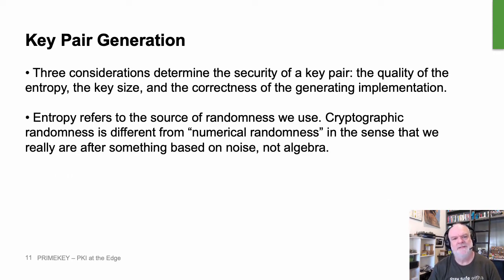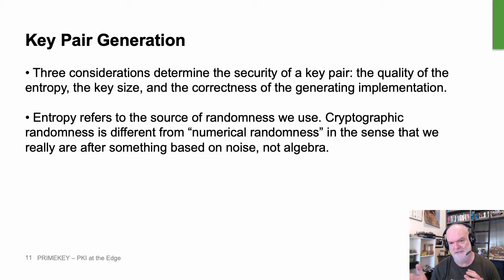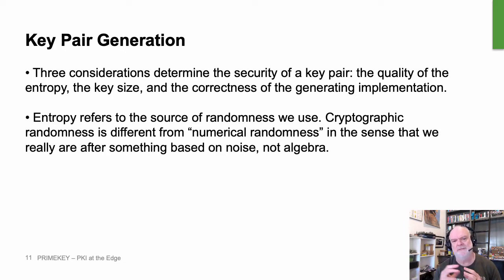For generating key pairs there are three considerations. First, you need good quality entropy. Second, you need to think about what key size you're going to use. Third, there's the correctness of the actual generating implementation. Entropy refers to the source of randomness being used. Cryptographic randomness is very different from numerical randomness — with a numerical random number generator you want a statistically flat range, but if you identify the formula in use it's actually possible to predict what numbers will be generated, and what came before. Neither of these things are useful in cryptography from a security point of view.